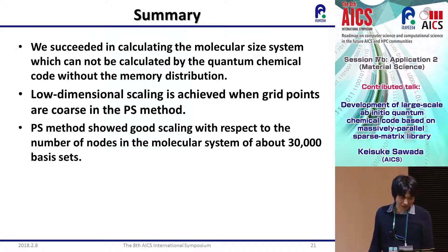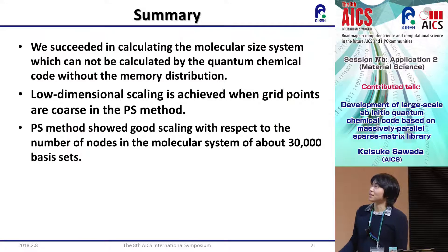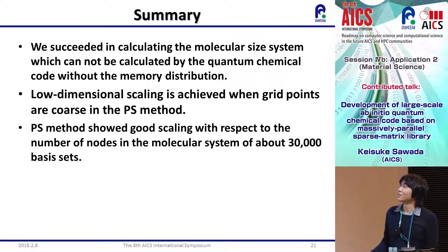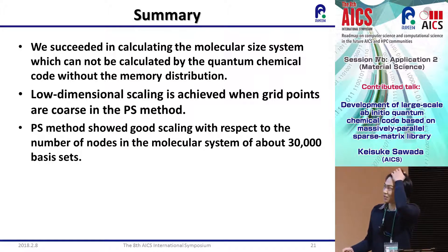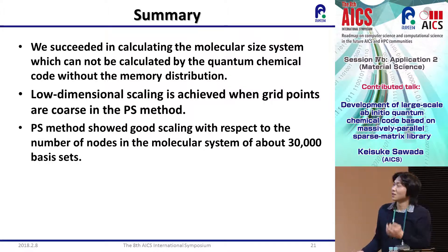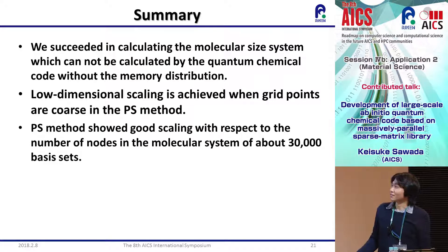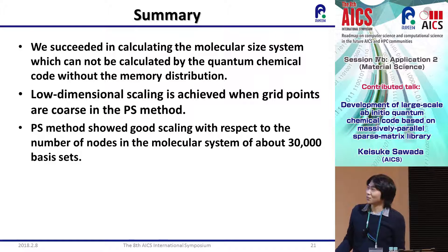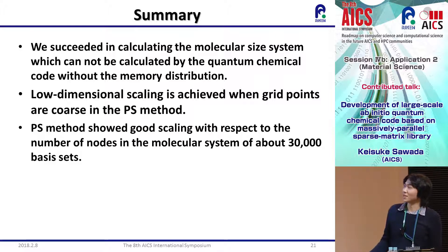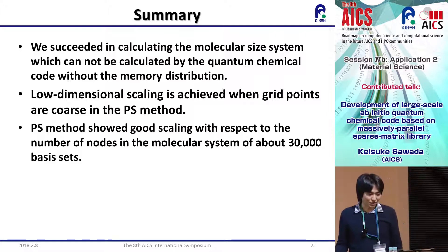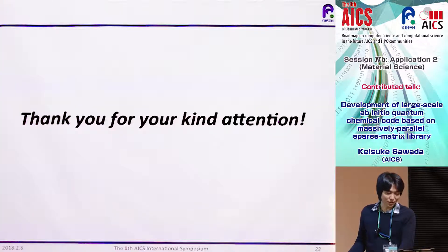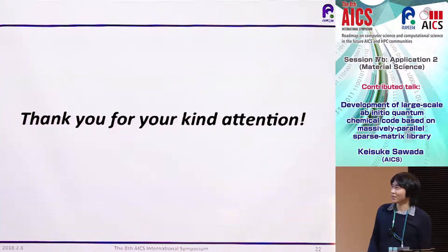To summarize: we succeeded in calculating larger molecular size systems than previously possible using quantum chemical code with memory distribution. Lower-dimensional scaling is achieved when using coarse grid points in the PS method. The PS method showed good scaling with respect to the number of nodes for molecular systems of about 30,000 basis sets. Thank you for your kind attention.